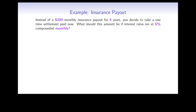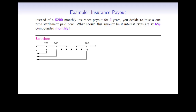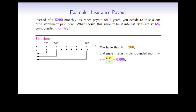Here is an example on an insurance payout. Instead of a $200 monthly insurance payout for 4 years, you decide to take a one-time settlement paid now. What should this amount be if interest rates are at 6% compounded monthly? We start by drawing a timeline. The regular payments are $200. Since interest is compounded monthly, the periodic rate r equals 0.06 divided by 12, which is 0.005. The total number of payments n is 4 times 12, equal to 48.